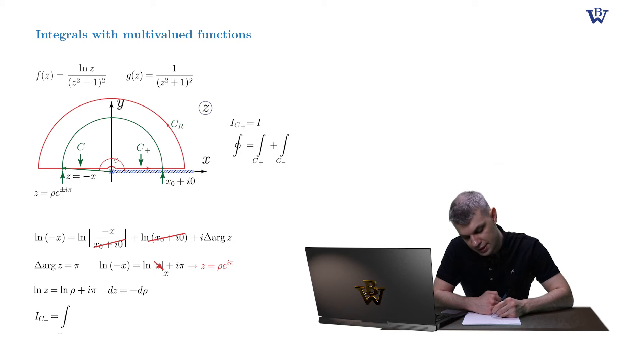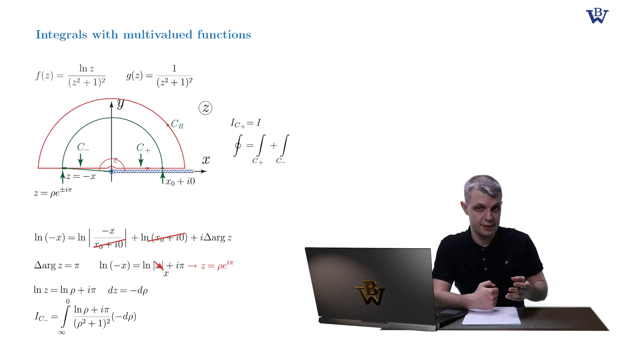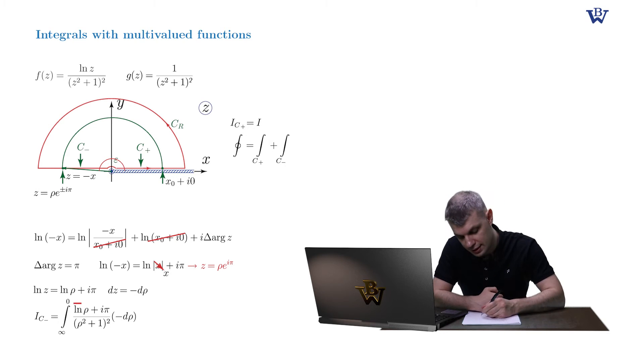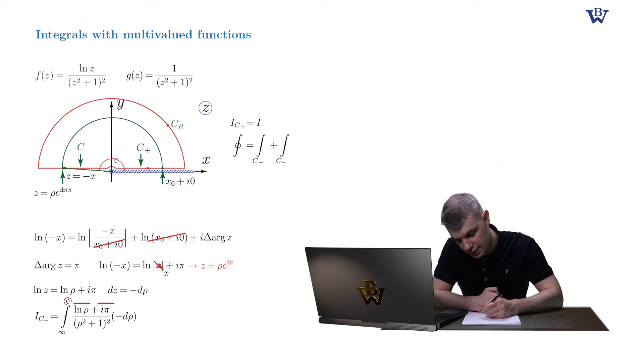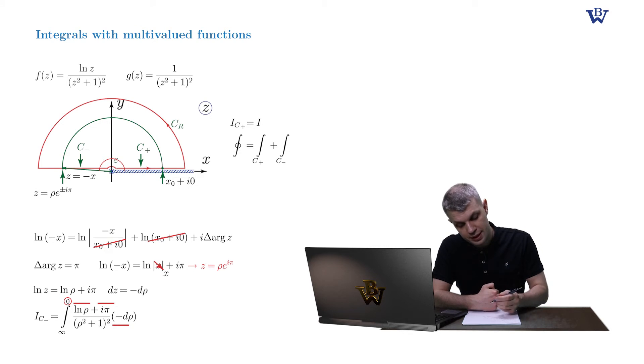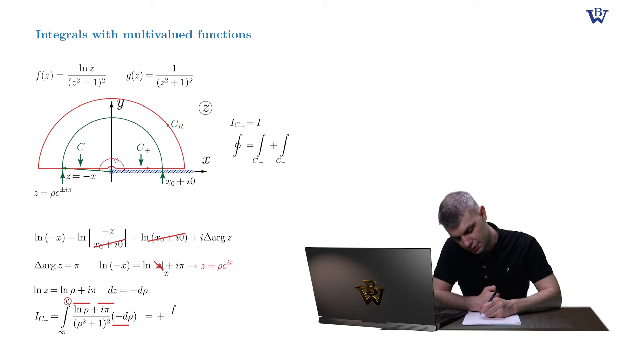So we have integral c minus equal to the integral from plus infinity to zero: log of rho plus i pi divided by the same denominator rho squared plus one squared, minus d rho. And as before, let's split this integral into two parts. And let us switch the limits of integration. And now pay attention to the additional minus sign in the differential of d rho.